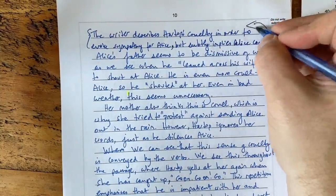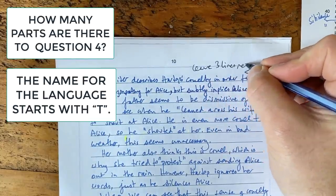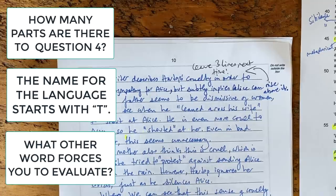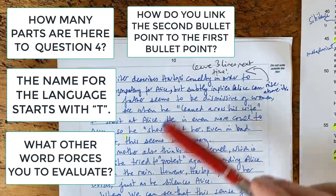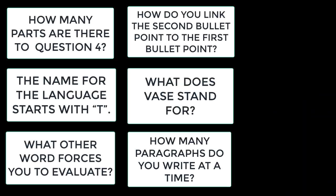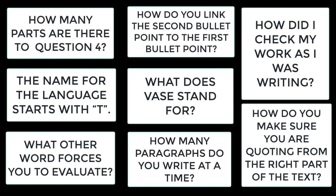Time to test yourself — what have you learned? How many parts there are to the question, what sort of language you should use, which words force you to evaluate, how to treat the second bullet point to link it to the first, how many paragraphs to write, what the different elements of VASE are and how to make sure you've got them all in, and how to make sure you're answering from the right part of the text. If you're unsure of any of these, go back to earlier parts of the video.